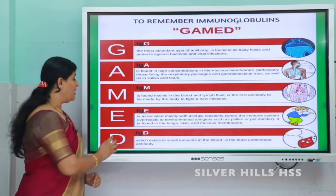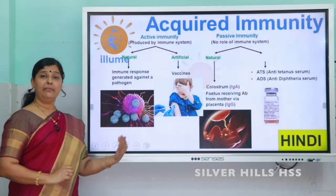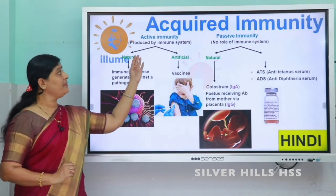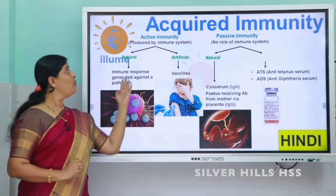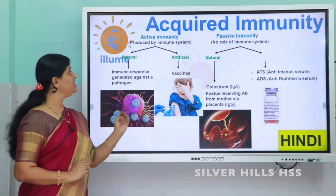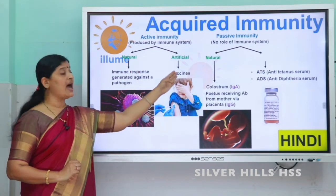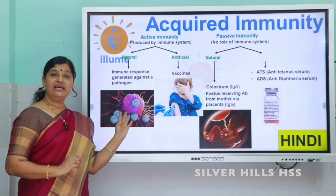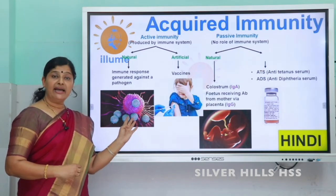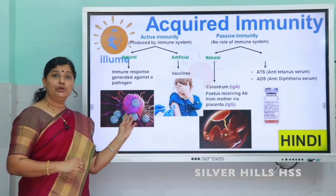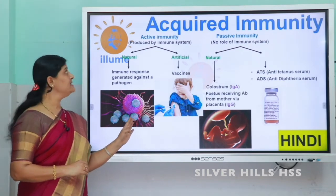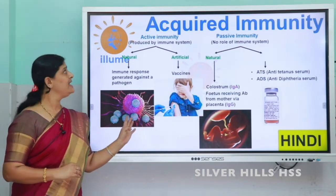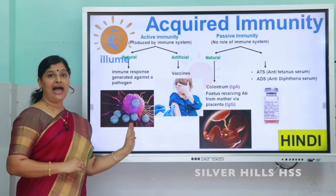Acquired immunity can also be divided into two categories: active immunity and passive immunity. Active immunity is again divided into natural and artificial types. Natural active immunity means the immunity that we get by exposure to microorganisms and foreign bodies — antibodies are produced — this is called active immunity.